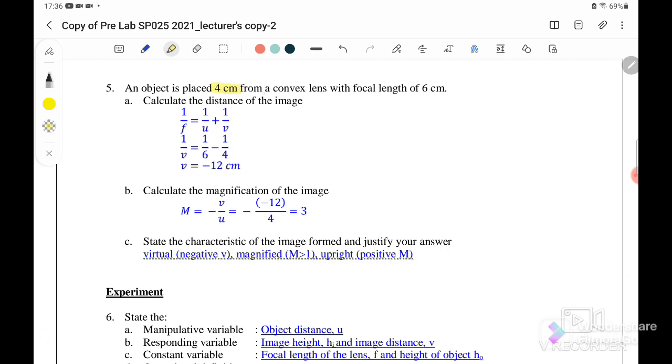Next, number five: an object is placed 4 cm from a convex lens with the focal length of 6 cm. Calculate the distance of the image. So we want to find v. We use 1 over f equals 1 over u plus 1 over v, where f equals 6 cm and the object distance is 4 cm. Therefore, v, the distance of the image, is negative 12 cm. So negative here indicates that this is a virtual image.